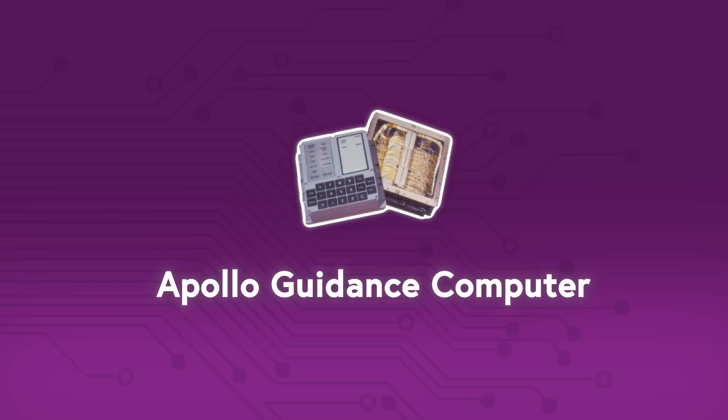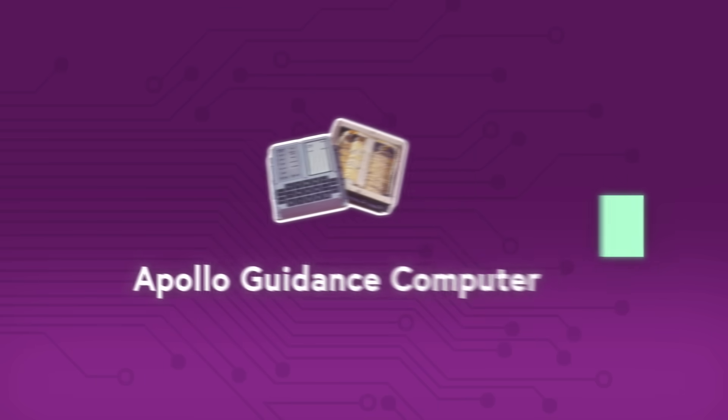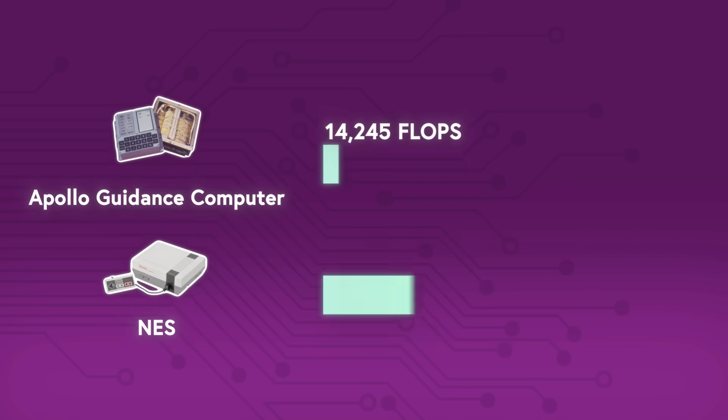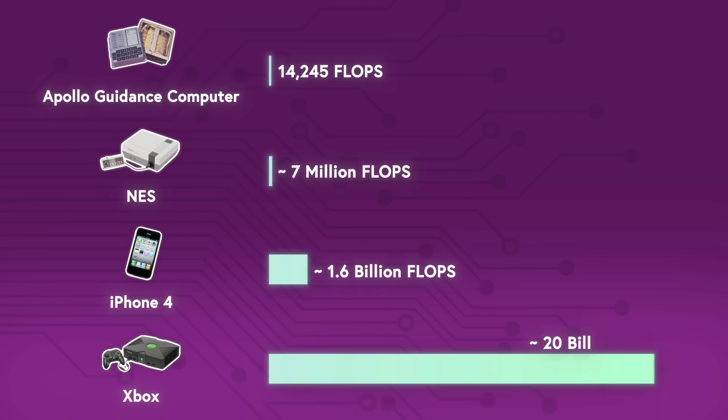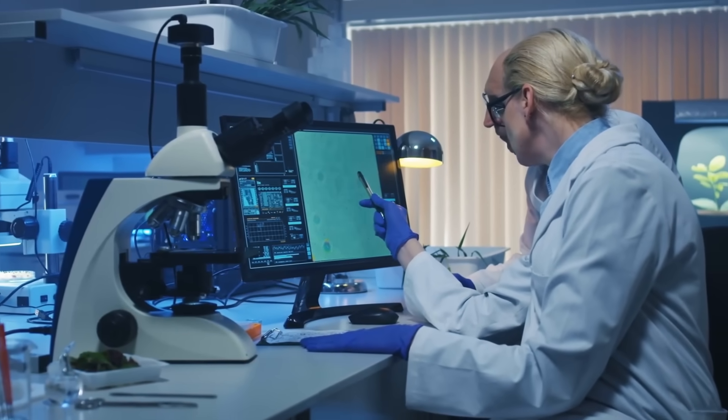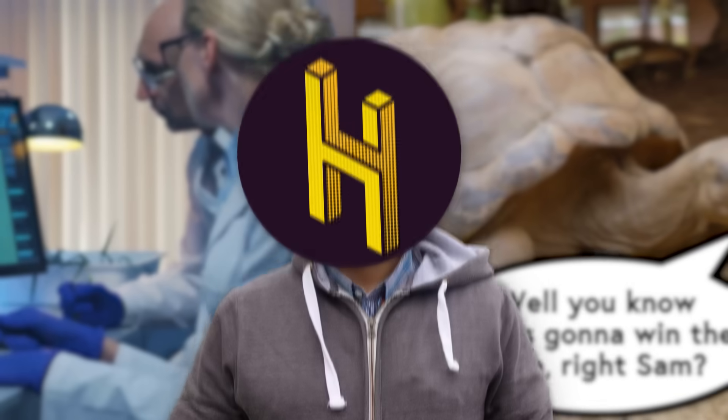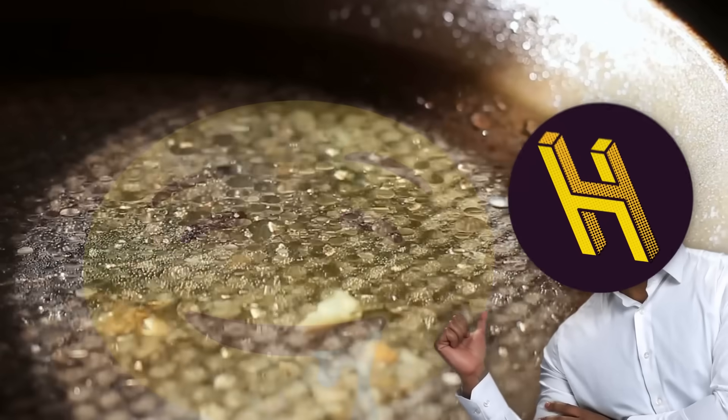The Apollo guidance computer, the one that allegedly got those actors to the moon, had the computational power of about 15,000 flops. But it was only about 0.25% of the NES's power, the Xbox had more than 6 times the power of the iPhone 4, and the Xbox 360 had more than 10 times the power of the Xbox. By comparison, advancement in just about every other industry looks like turtle racing. I mean, in that same time, McDonald's fries got worse. Bring back the animal fat.